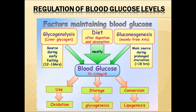When we are fasting and do not take food for 12 to 18 hours, glycogenolysis will occur with the help of glucagon hormone. In this process, glycogen present in liver and muscle cells is converted into glucose. That glucose from liver and muscle cells comes into the blood, increasing blood glucose levels.